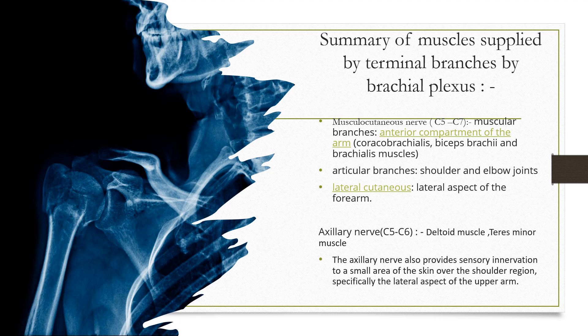The musculocutaneous nerve has a root value of C5 to C7 and it supplies the anterior compartment of the arm. It also has articular branches for the shoulder and elbow joint, and a lateral cutaneous branch for the lateral aspect of the forearm.